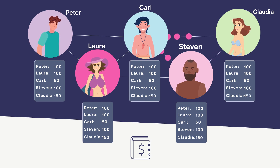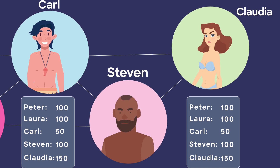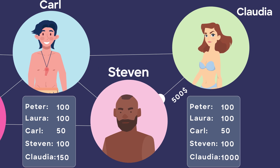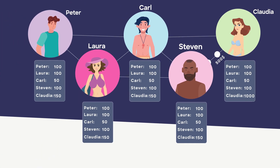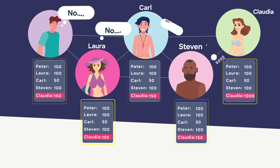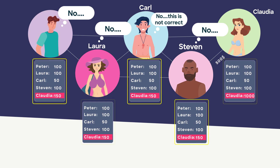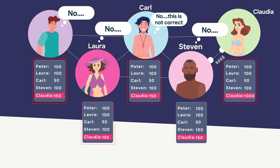This example also shows why it is so difficult to cook the books on the blockchain. Imagine that Claudia wants to cheat and she writes in her notebook: Claudia, $1,000 — send $500 to Steven. Remember, to make a transaction possible, all the records must match. Now we can see that Claudia's attempt to cheat has failed because her modified record does not match with the other four. That's why the transaction was rejected.